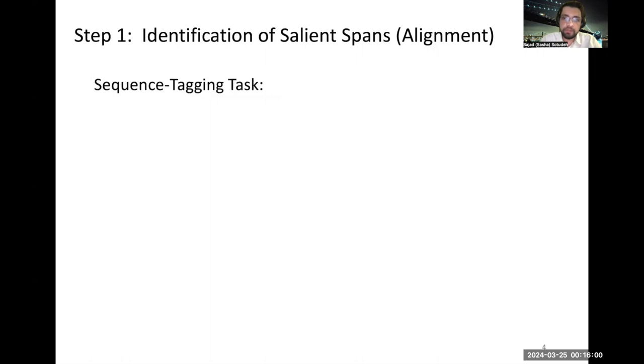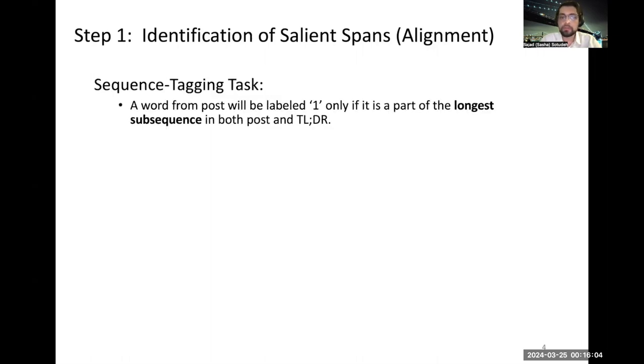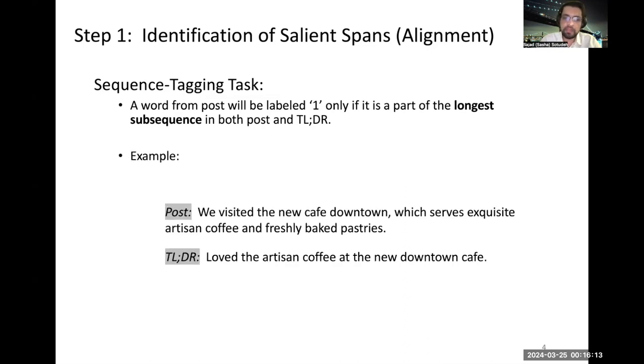In the first step, we treat it as a sequence tagging problem, where a word from post will be labeled as one or copied only if it is a part of the longest subsequence within the post and TLDR. You see an example here where we have two actually longest phrases between the post and TLDR labeled as one.